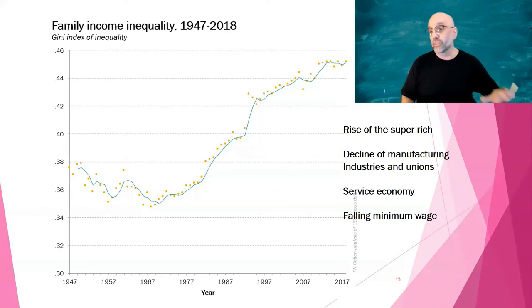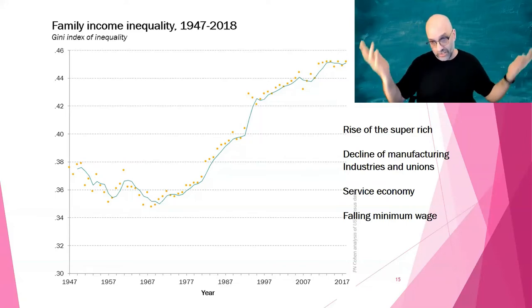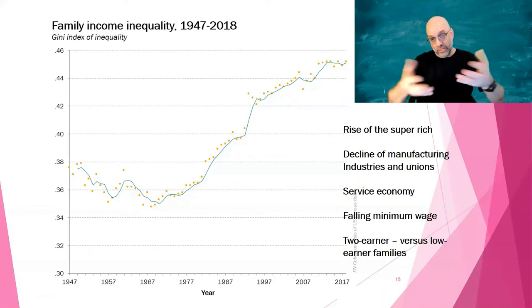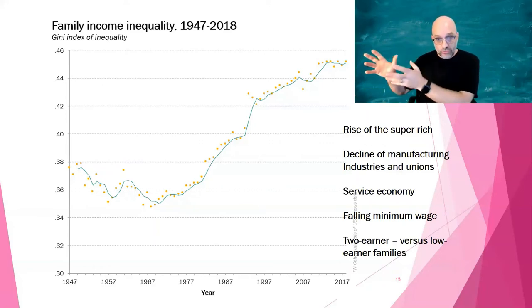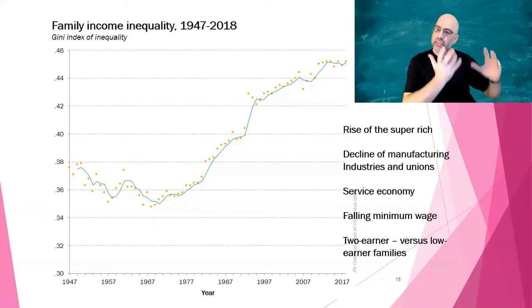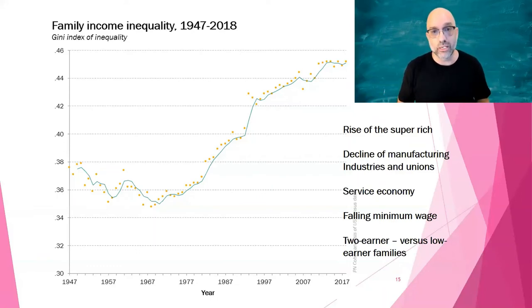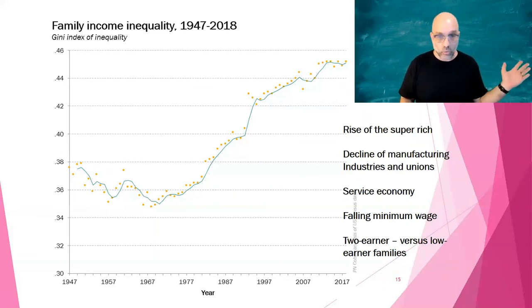For lower-income jobs, we've also had the minimum wage falling in real terms because it hasn't been raised enough to keep up with inflation. And in terms of family structure — this is family income we're looking at — since women's employment has increased, we have more two-earner families higher up in the distribution, and more low-income single-earner families at the bottom. That's also helped contribute to inequality. Just a few reasons — obviously we could do a whole course on why inequality has increased.